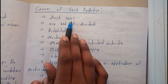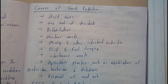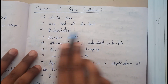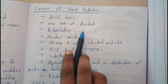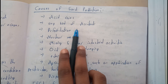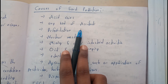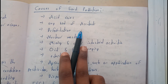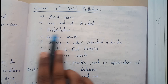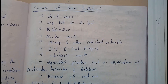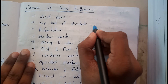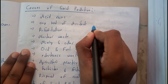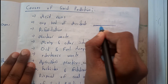Any kind of accidents can also cause soil pollution. Deforestation is another well-known cause — the cultivation done on soil is affected when deforestation occurs.